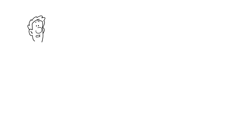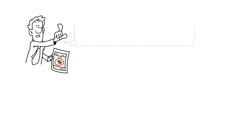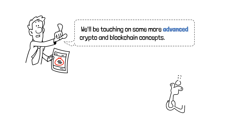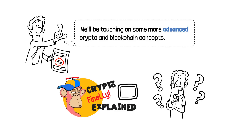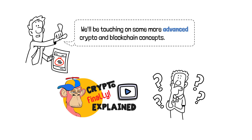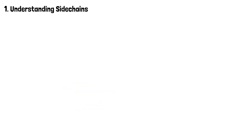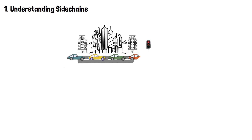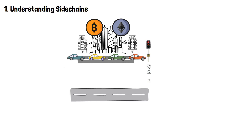Let me first address the fact that we'll be touching on some more advanced crypto and blockchain concepts. So if you want to learn the basics first, head over to my channel, where I have videos covering essential topics about crypto. That being said, let's answer what is a sidechain in crypto. Earlier, I used the analogy of a congested highway to describe popular blockchains like Bitcoin and Ethereum. Now, imagine alongside this bustling highway, there are specialized local roads designed to alleviate traffic. This is basically how sidechains work in crypto.